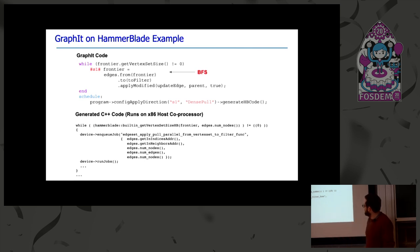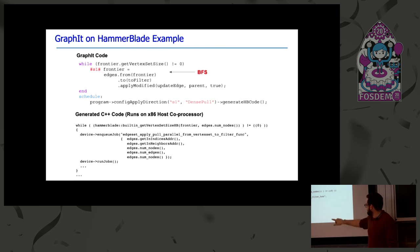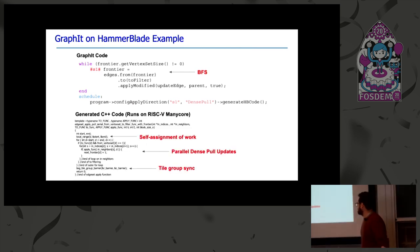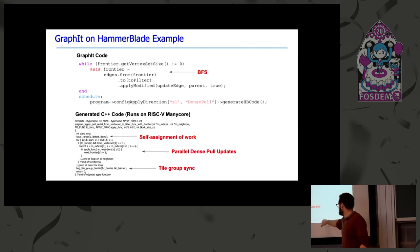In the scheduling language we've specified the dense pull direction and that we want to generate HammerBlade code. The generated host-side code runs on x86 or Black Parrot — it's just the outer loop, offloading the work. The generated RISC-V C++ code has self-assigned work using a local range function, performs a parallel dense update, and when all the work is done, executes a tile group sync.